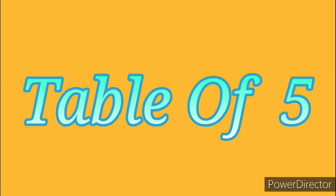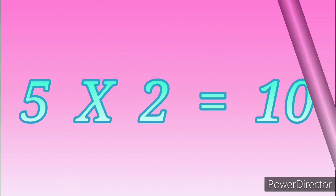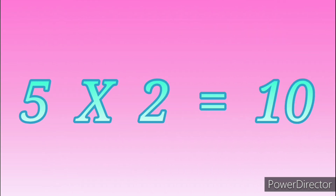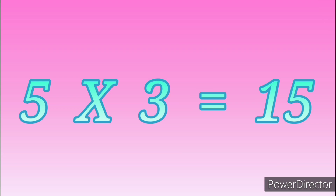Table of Five. Five-One's are five. Five-One's are five. Five-Two's are ten. Five-Two's are ten. Five-Three's are fifteen. Five-Three's are fifteen.